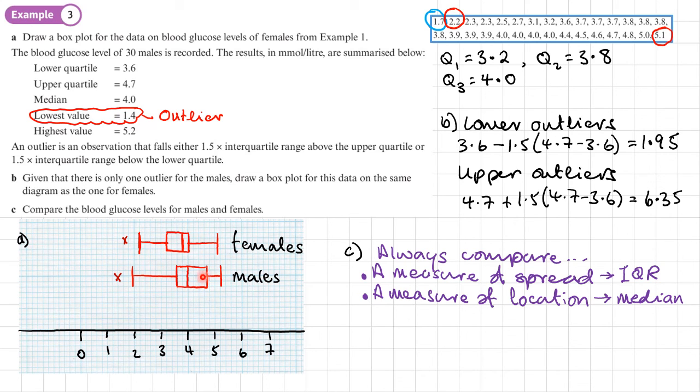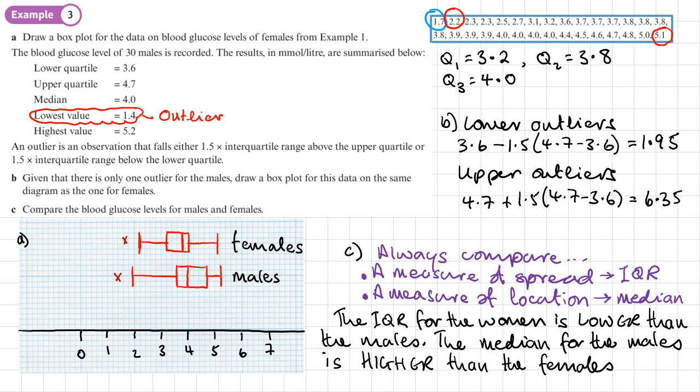Let's have a look at these box plots so that we can make those comparisons. My comparisons are that the interquartile range for the women is lower than the males. This box isn't as wide as the males are.